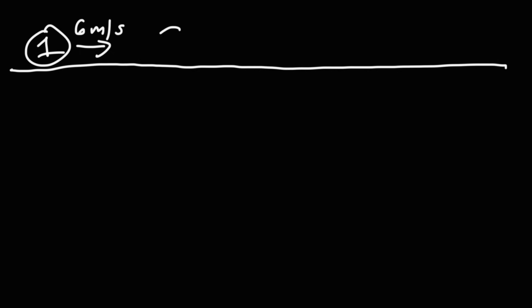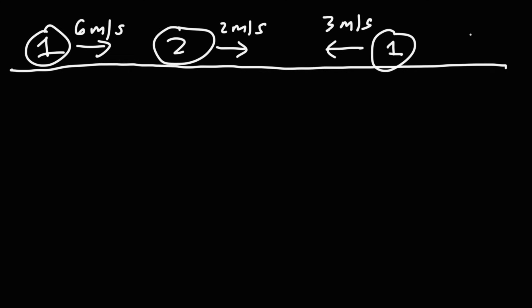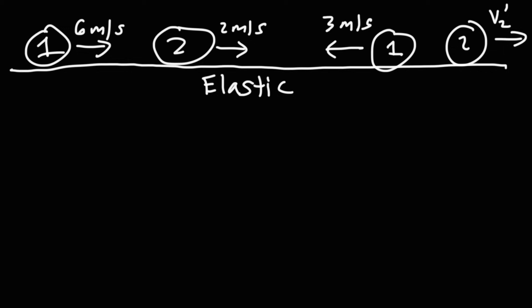Now consider a ball moving at 6 meters per second striking ball two, which was initially moving at 2 meters per second. They bounce off each other — ball one goes back at 3 meters per second and you want to find v2_final. If they bounce off each other it could be an elastic collision, but make sure the problem specifies that. For a perfectly elastic collision, kinetic energy is conserved as well as momentum. To solve this problem you would use equation seven, the conservation of momentum equation.